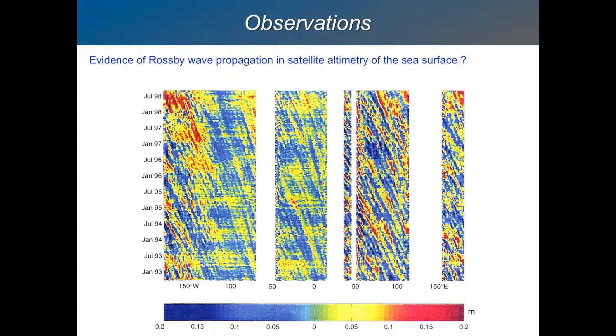Right, observations. Here are some observations which show some horizontal propagation. So this is altimeter data. This is from a satellite altimeter where they've been looking at the sea level. And these are perturbations of the sea level over about five years, between 93 and 98. So it's quite old, this picture.